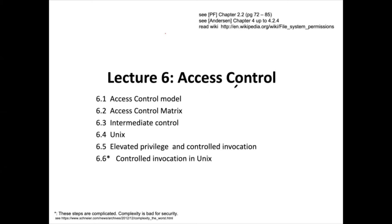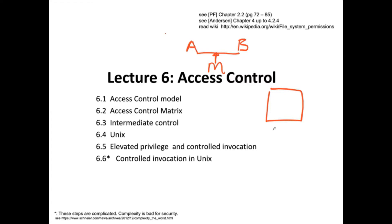We have studied communication security for quite some time. In communications security, we have Alice communicating with Bob under the influence of a malicious man in the middle. Today we are going to talk about something different — computer security or system security. Computer systems operate on data and carry out computation, and the security issues are different from communication security. One issue we want to study is access control.